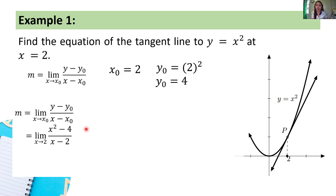Because 2² = 4, and 4 minus 4 = 0. And the limit of the denominator as x approaches 2 gives 2 minus 2 = 0. So we have an indeterminate form of type 0/0.